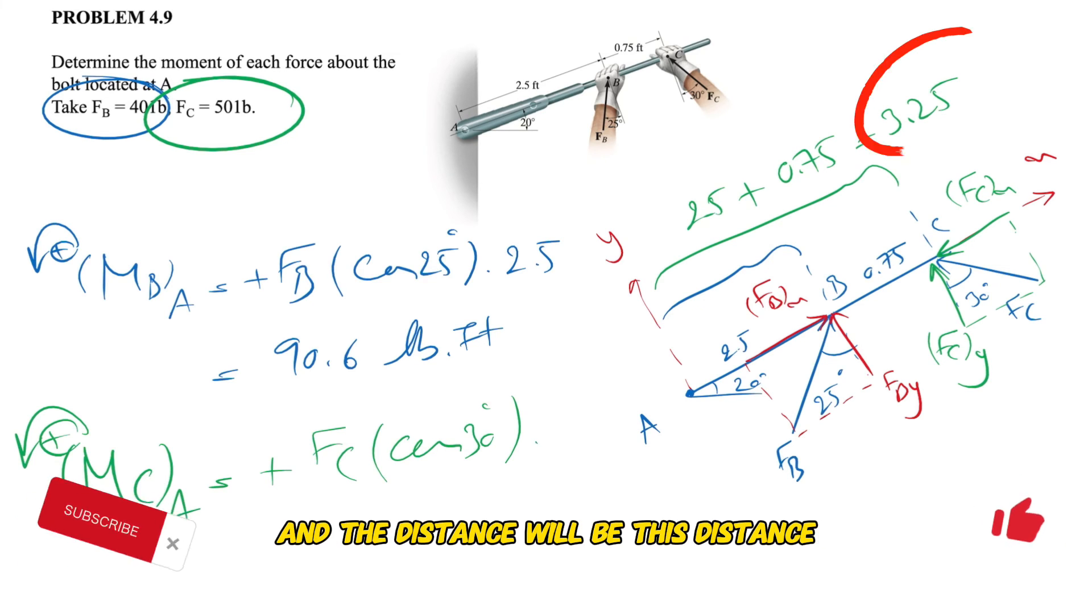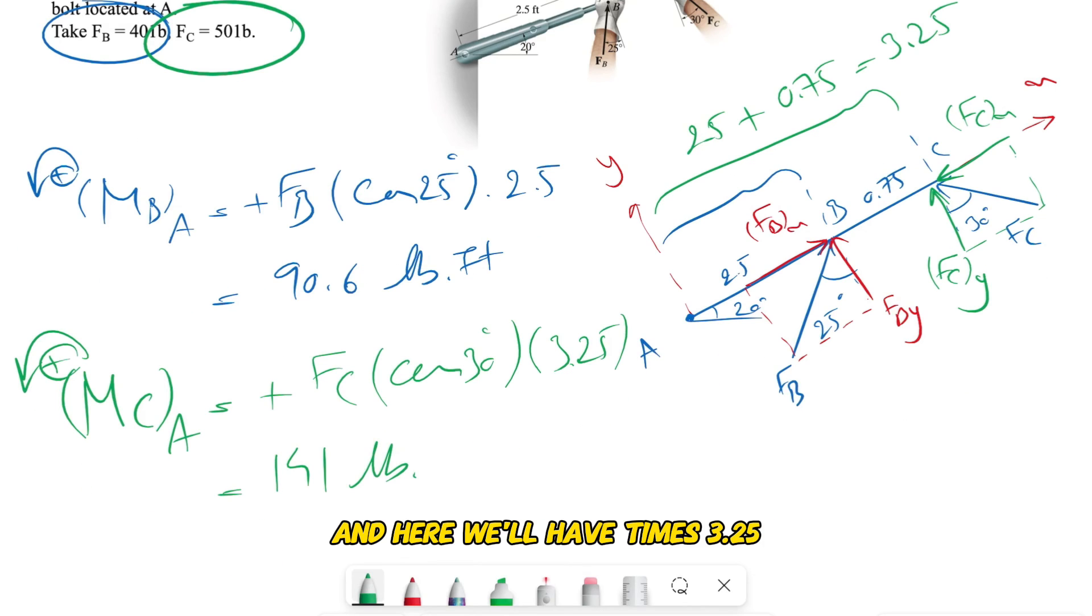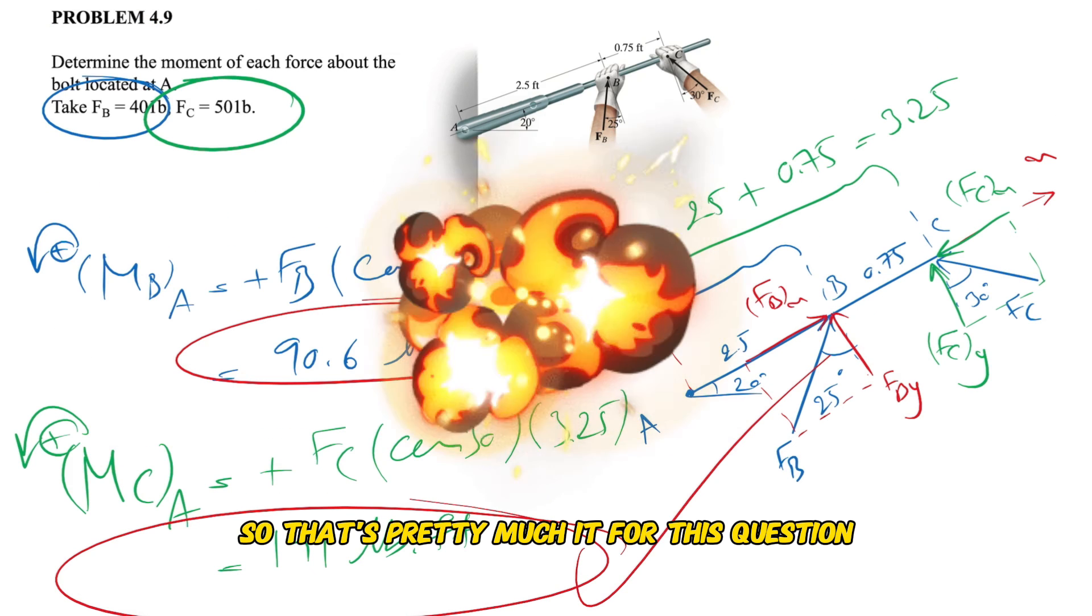And the distance will be this distance which is 2.5 plus 0.75 which will be 3.25. So we'll have times 3.25, and if we calculate this we'll get 141 pound-foot. So that's pretty much it for this question.